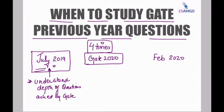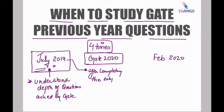For example, if a student is going to attempt gate 2020 and starts preparation in July 2019, the first attempt at previous year questions should be before starting the preparation. If a student is starting network theory today, he must first go through the previous year questions of network theory to understand the depth of questions being asked by gate. After completing the syllabus of network theory — for example in 10 to 12 days — he must attempt the previous year questions a second time to verify that all points are covered.